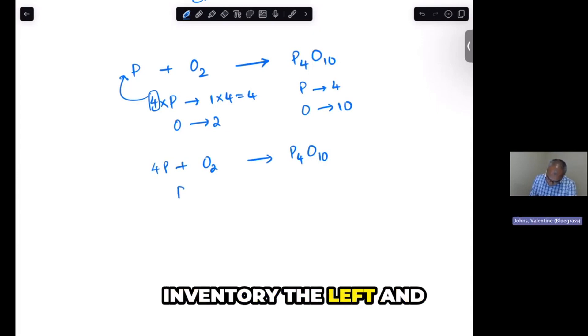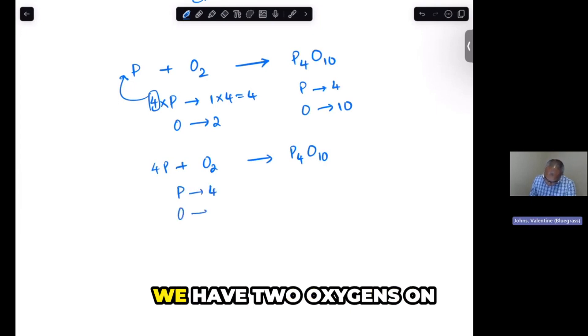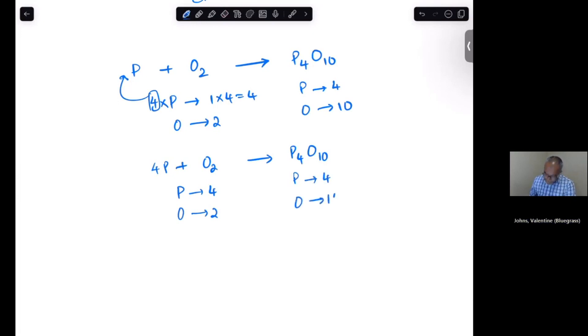So let's go ahead and inventory the left and the right again. We have 4 phosphoruses on the left, 2 oxygens on the left. We have 4 phosphoruses on the right, and we have 10 oxygens on the right.